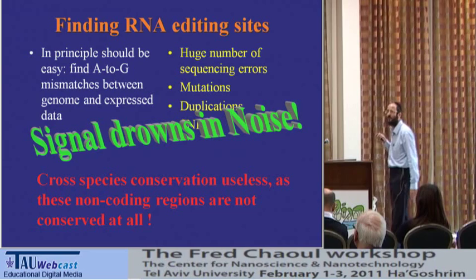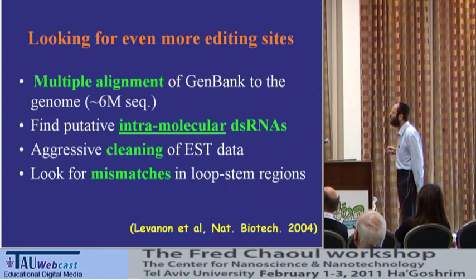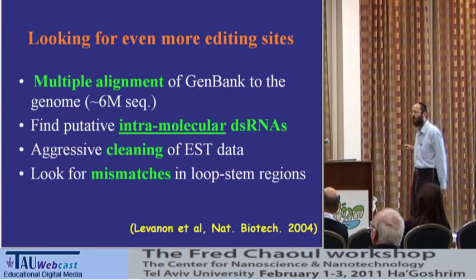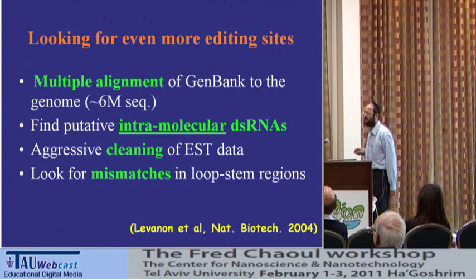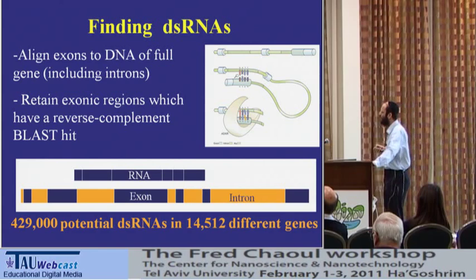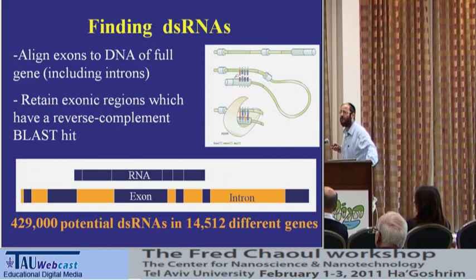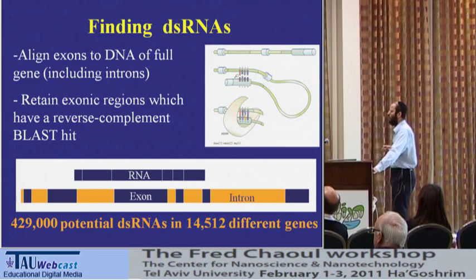Here we use secondary structure. We went over the whole human genome and looked for all regions that are potentially double-stranded RNAs. We found that in about 60–70% of human genes there are regions that are potentially double-stranded RNA — quite common. There are about 4,000 such regions, with a typical length of around 300 base pairs. This is a quite large fraction of the genome, but we focused on it.